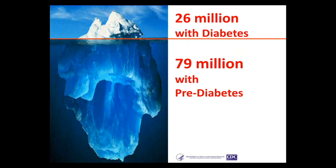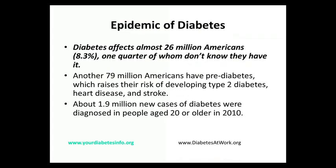We have 26 million people with diabetes, but we have another 79 million people with prediabetes. Prediabetes is when a person's blood sugar is higher than normal but not high enough for a formal diagnosis of diabetes. Folks with prediabetes have a real condition — it isn't a touch of sugar or borderline diabetes. People with prediabetes have an increased risk for developing heart disease and stroke, so we want to identify and treat those folks as well.